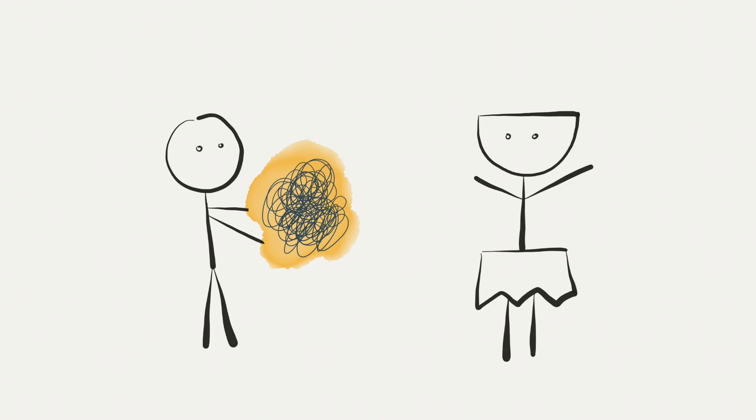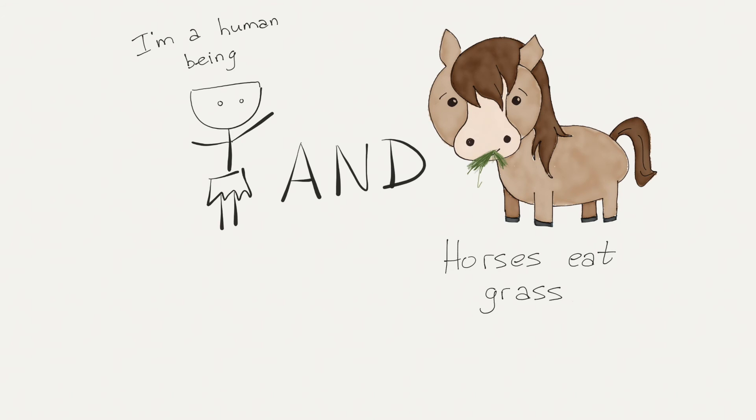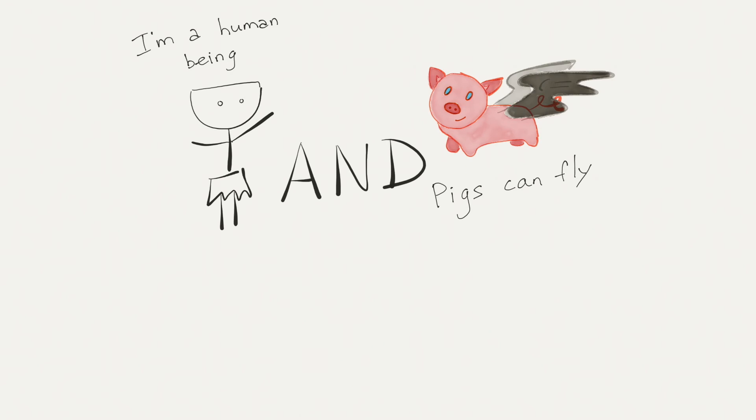There are many aspects and details in boolean algebra, but in programming we are mostly concerned about three basic operations: And, or, not. And is when you want two conditions to be true. I'm a human being and horses eat grass is true, because both statements are true. I'm a human being and pigs can fly is false, because one statement is true, but other one is false. So together, this whole thing joined by and is false.